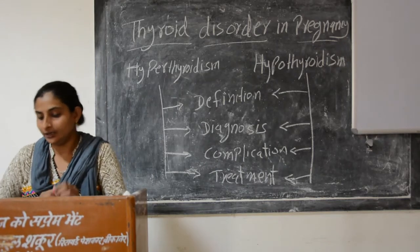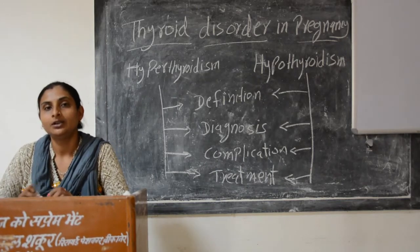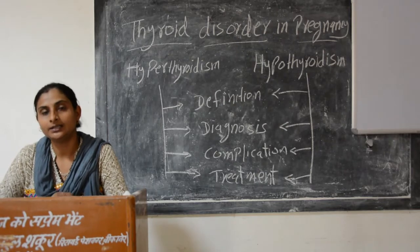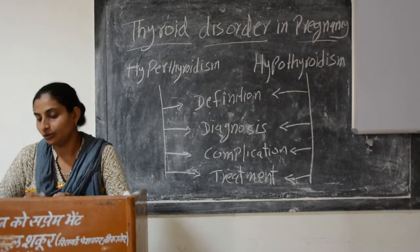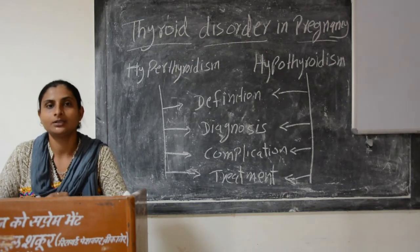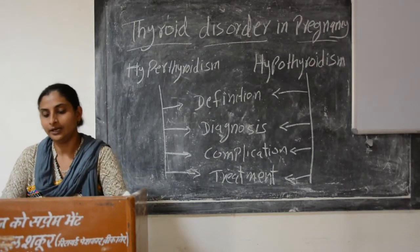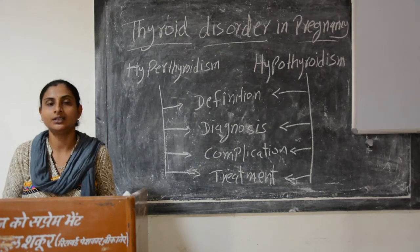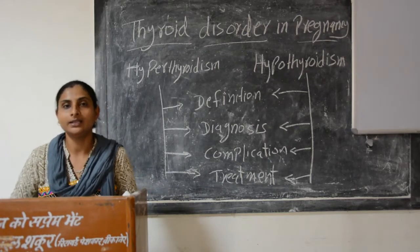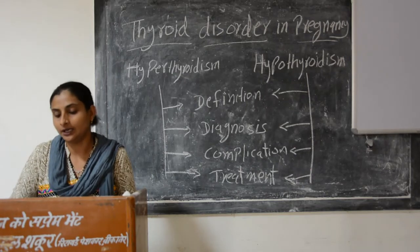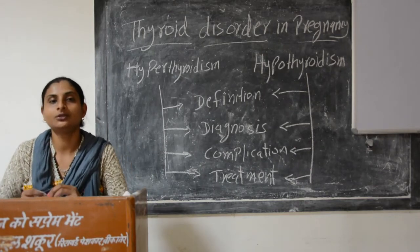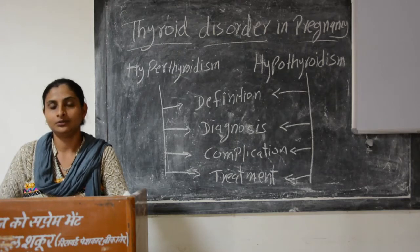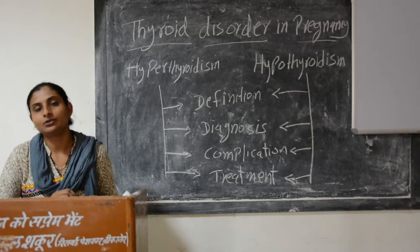In the thyroid receptors, there are antibodies. Thyroid cells are stimulated by auto-antibodies, causing the thyroid to become hyperactive with hyper-secretion, and the size of the thyroid gland is enlarged. Graves' disease is also known as hyperplastic goitre, with thyromegaly, enlargement, and exophthalmos.